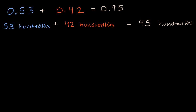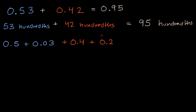Now the other way we could have thought about it is we could have broken these numbers up. We could have said that this first number is five-tenths plus three-hundredths. And then the second number we could have rewritten as four-tenths plus two-hundredths.